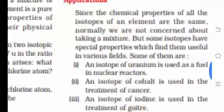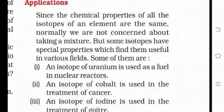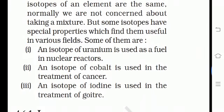The chemical properties of all isotopes of an element are the same. But some isotopes have special properties which find them useful in various fields. An isotope of uranium is used as fuel in nuclear reactors. An isotope of cobalt is used in the treatment of cancer. And an isotope of iodine is used in the treatment of goiter. Isotopes bohot important hain, aur inki applications hamare day-to-day life mein bhi bohot useful hain.